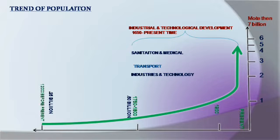The population growth is not always the same. If we track it, we can see the population growth in this graph. We can clearly see that 12,000 years ago the population was 0.25 billion.